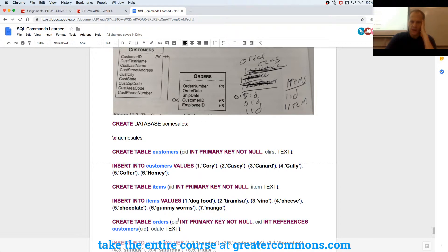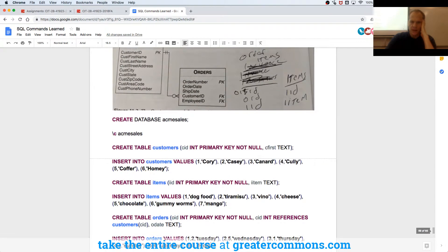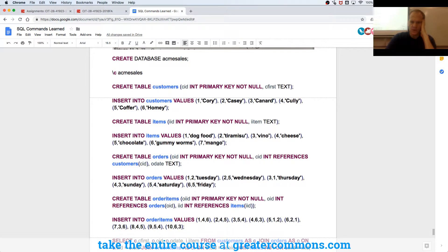And Orders has an Order ID, a Customer ID, and an Order Date. And then I inserted into Orders that stuff. And then I created Order Items. And Order Items is going to have this.